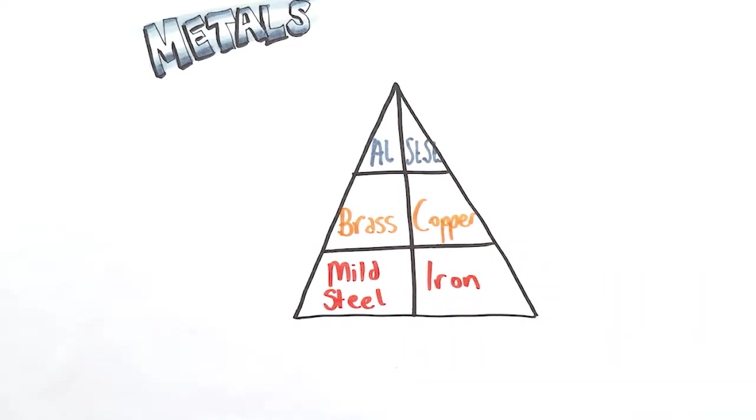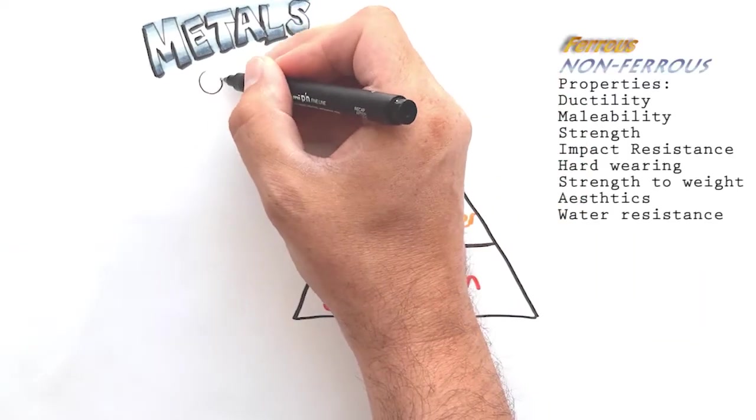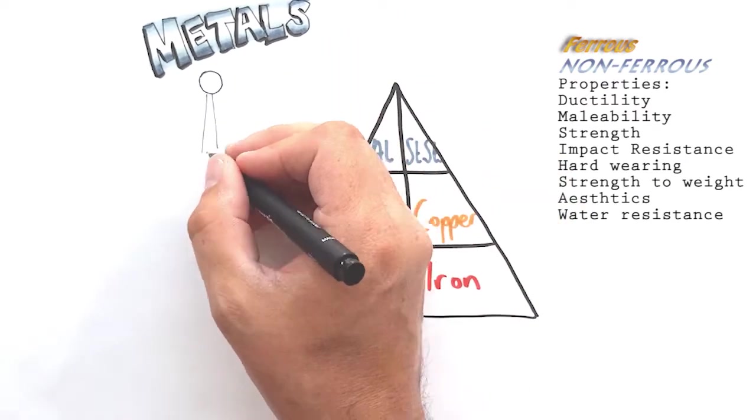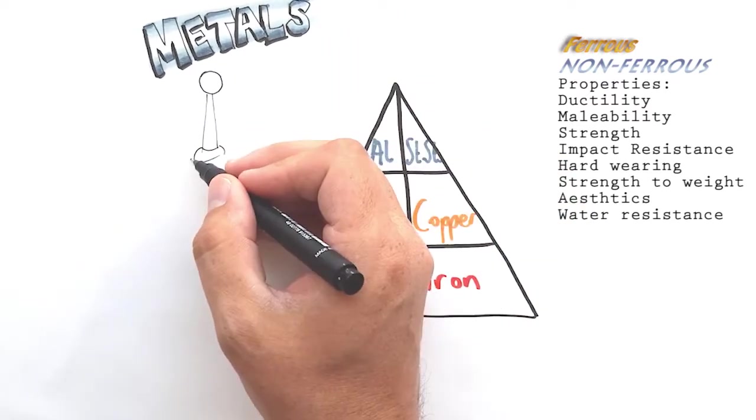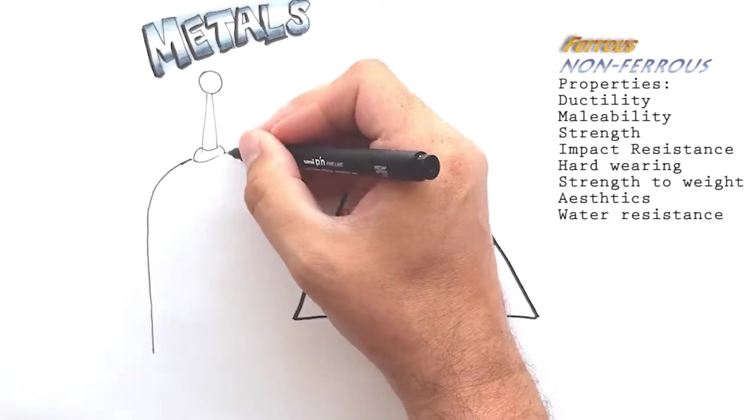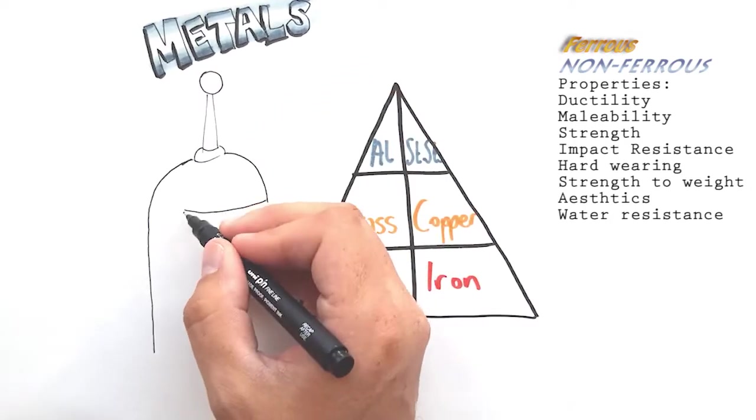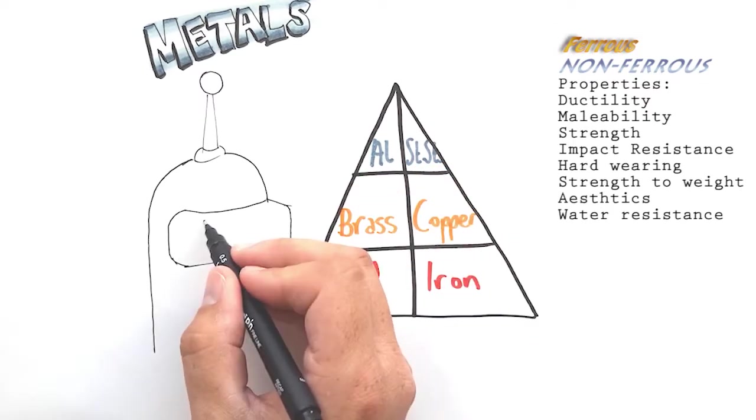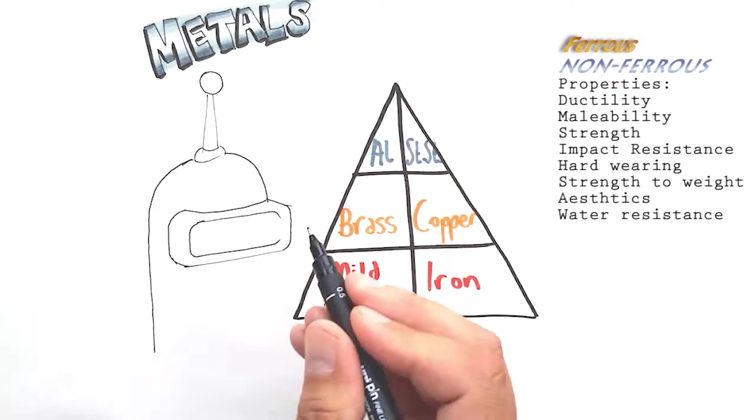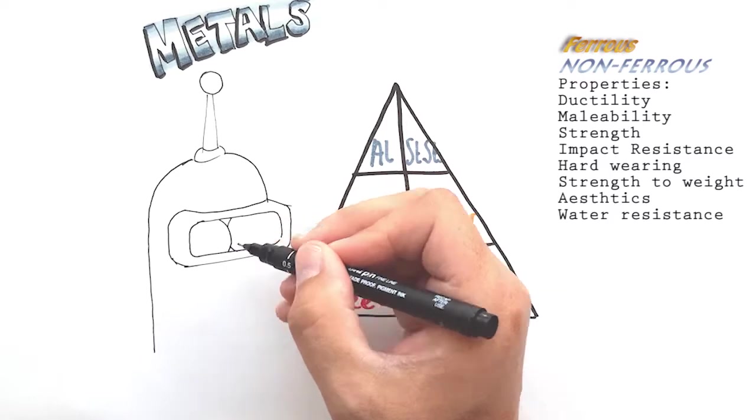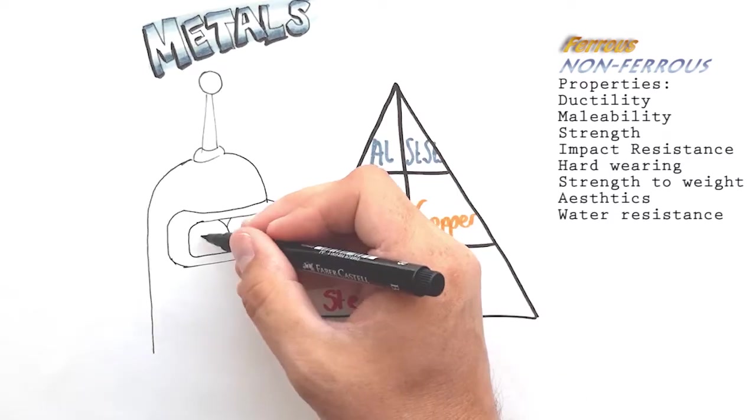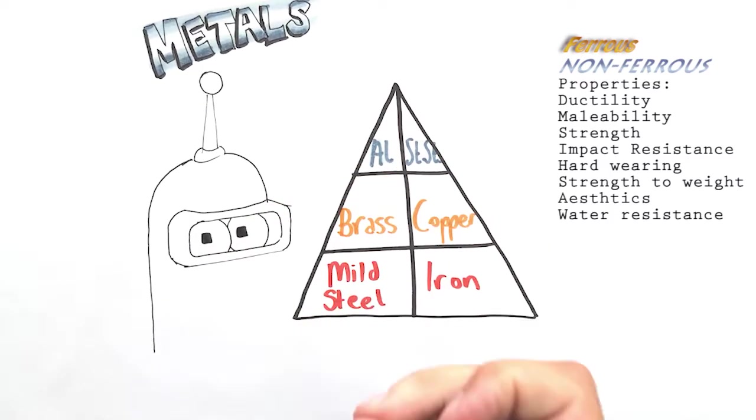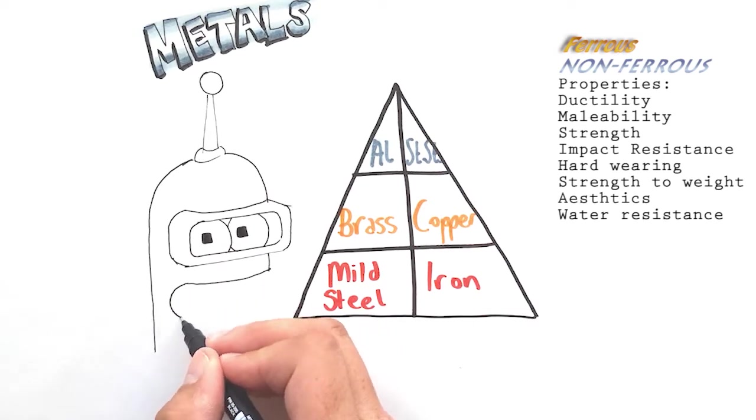But first of all I want to talk about the properties in general of these materials. We're going to start off by talking about ductility and malleability. In metal the ductility and malleability of the material is the ability for the metal to bend and be formed into shape without tearing or cracking.